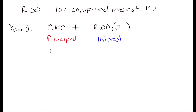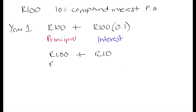So here we have our principal and this is our interest. What we are going to have at the end of that first year is 100 Rand, which is our principal, plus 10 Rand, which is our interest — because 10% of 100 is 10. So in total we are going to have 110 Rand at the end of year one.